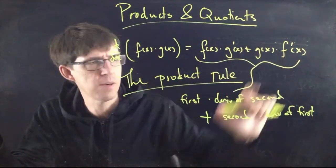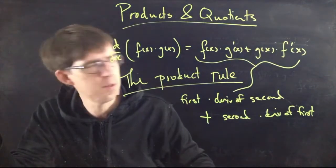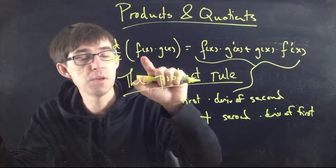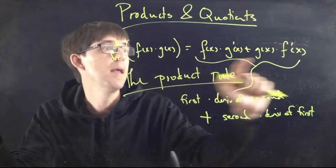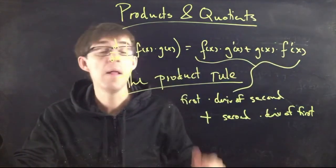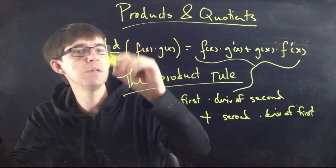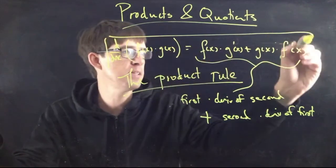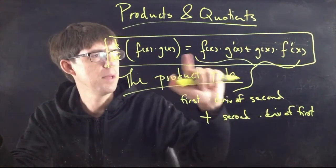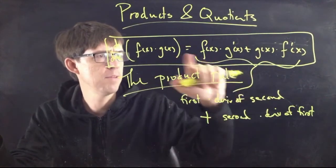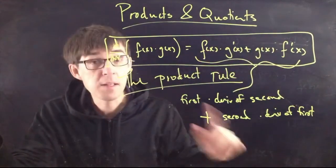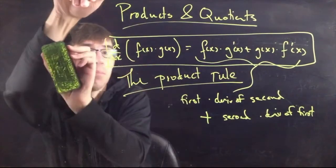Make sure you get those primes in the right spots — they are very important. f(x) means the original function just as written; f′(x) means the derivative of that function. This is the product rule. You absolutely need to memorize this. I memorize it using the slogan — it's probably better than just memorizing what the formula looks like. Let's see how it looks in a few examples.